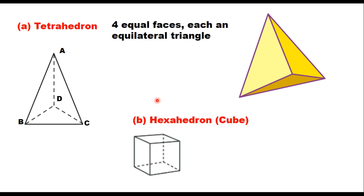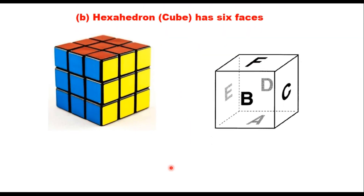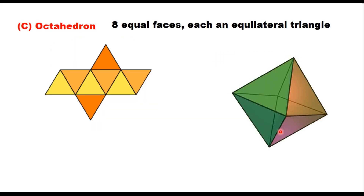A hexahedron is a cube — a solid bounded by 6 square faces, with faces A, B, C, D, E, and F all being squares. An octahedron has 8 equal faces, each face being an equilateral triangle. If you open this solid it looks like 8 equilateral triangles, and when closed they form the shape of an octahedron.